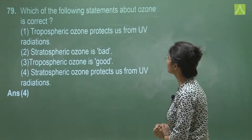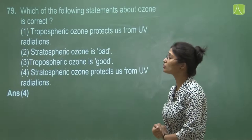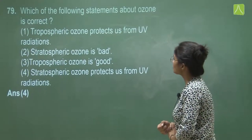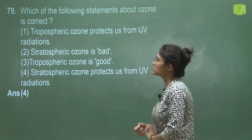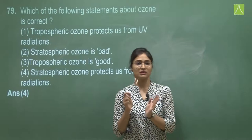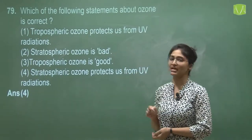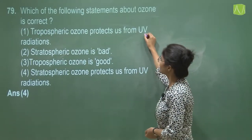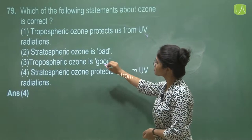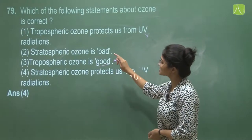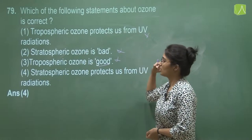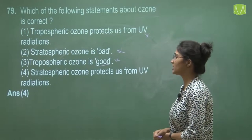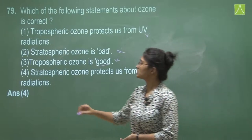Question 79 asks which statement about ozone is correct. Tropospheric ozone is actually a pollutant and cannot protect us from UV radiation — option one is wrong. Tropospheric ozone is bad ozone and stratospheric ozone is good ozone. Option four states that stratospheric ozone protects us from UV radiation — this is correct. The right answer is option four.